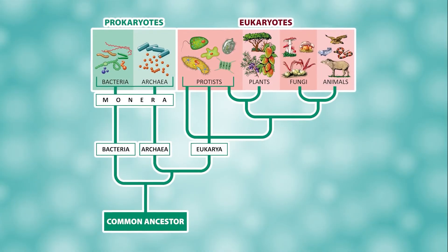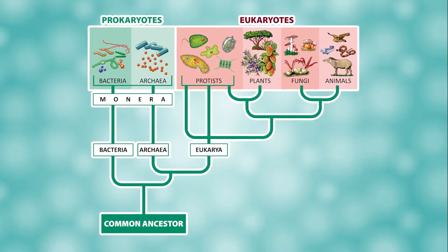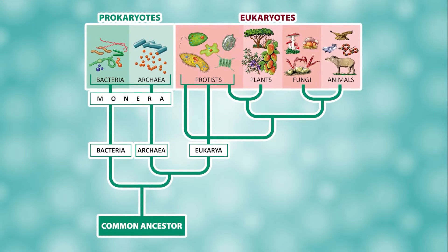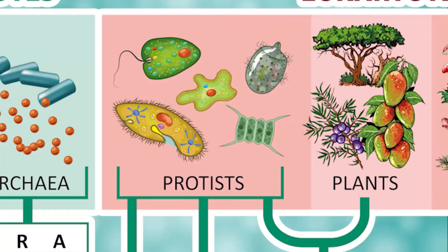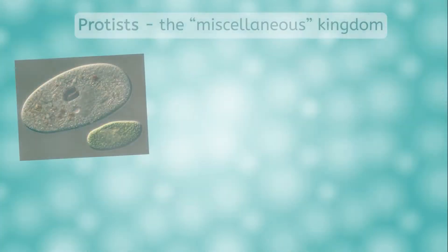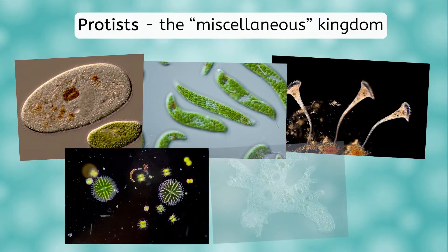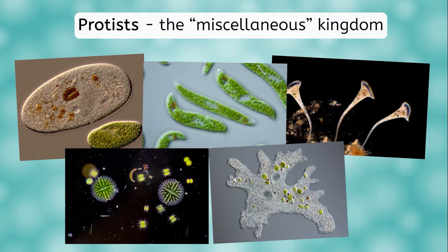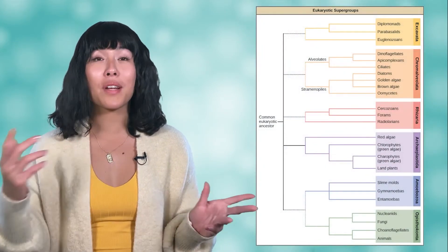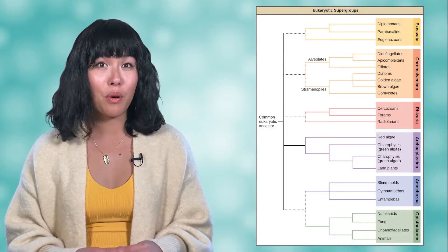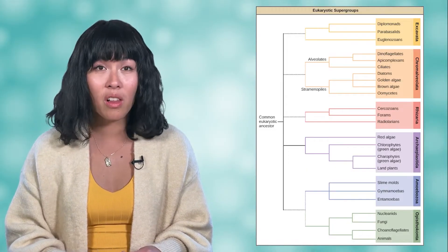It is most common today to place all unicellular or microscopic organisms that are not prokaryotes in the protist kingdom. It ends up being a bit like a miscellaneous category for all the species that don't quite fit in anywhere else. However, many scientists argue that the organisms found in this kingdom are so diverse that they should be split into many separate kingdoms. Other scientists don't feel that a protist kingdom is needed at all, and would rather see these species placed within the plant, animal, or fungi kingdoms instead.